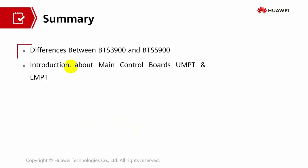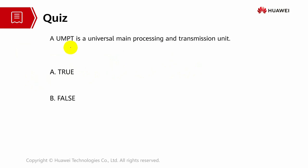That's all for part three. We have discussed the differences between BTS 3900 series and BTS 5900 series, and the introduction of the main control boards UMPT and LMPT. Here is a review question: A UMPT is a Universal Main Processing and Transmission Unit — true or false? The answer is true. Thank you for your attention.